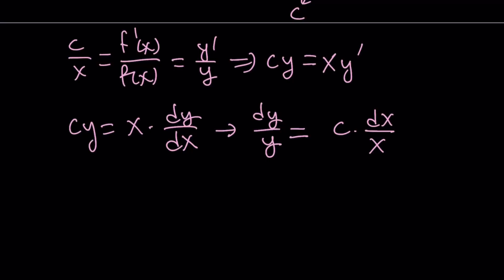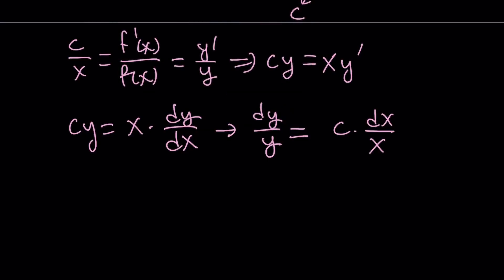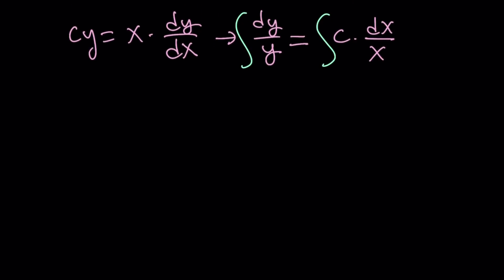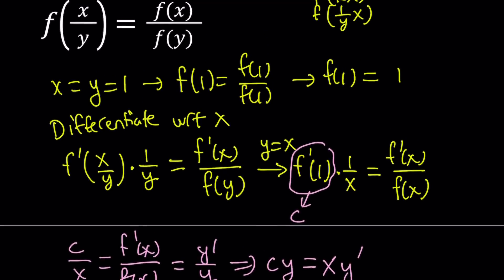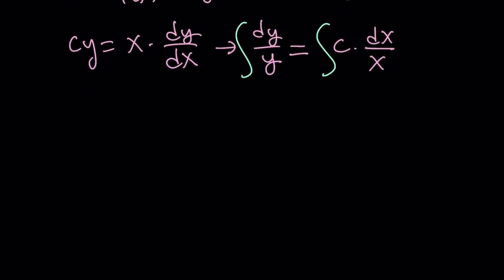So dy over y, and everything else will be on the other side. dy over y equals c times dx over x. The variables are already separated. Now let's integrate both sides. Since they are separated, we can find y from here.